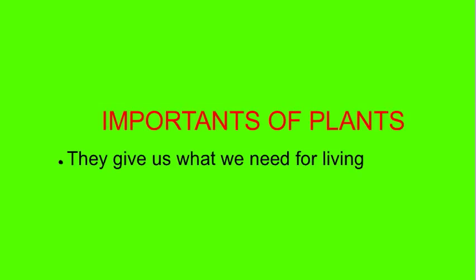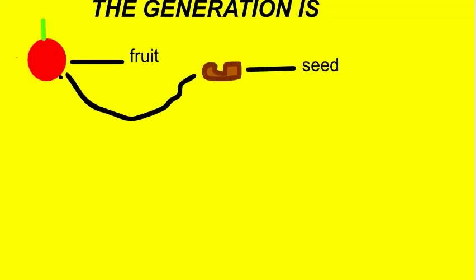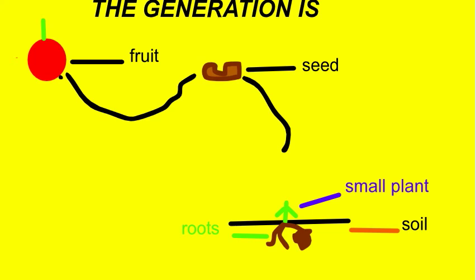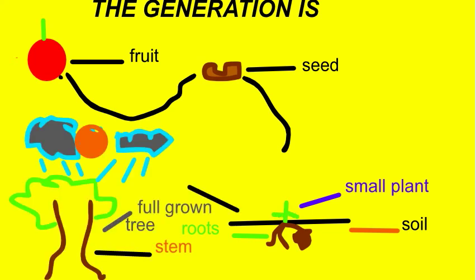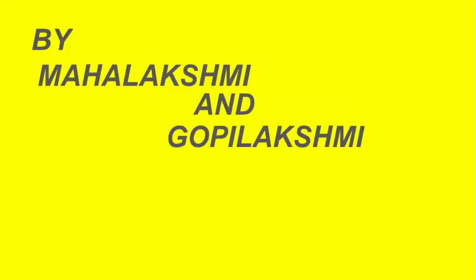This is called the importance of plants. They give us what we want for living. The generation is fruit to seed, seed to small plant, and with the help of rain, sunlight, etc., the small plant grows into a big tree. Thank you.